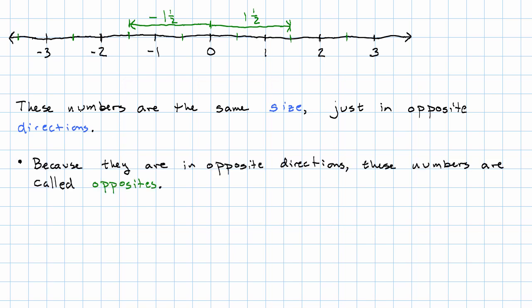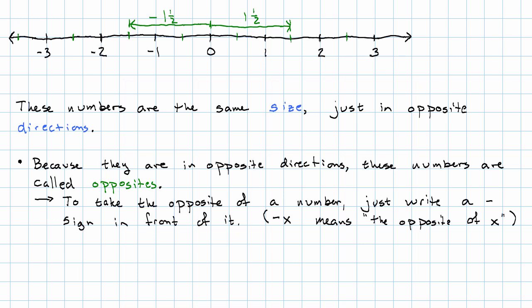What do we need to know about opposites? Well, first we need to know how we indicate taking the opposite. So for any number, a negative sign in front of that number just means take its opposite. For clarity, we'll sometimes write the number itself in parentheses. So we could say the opposite of one and a half is negative one and a half. And the opposite of negative one and a half is positive one and a half.